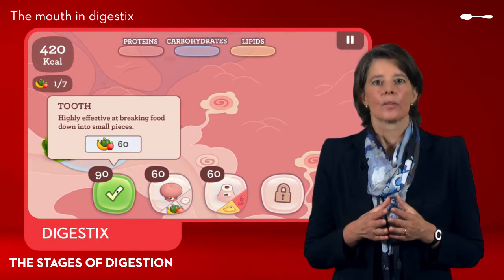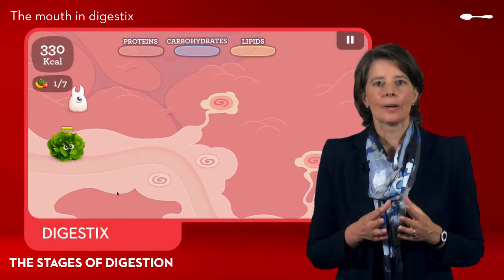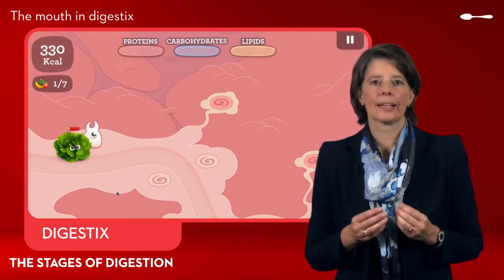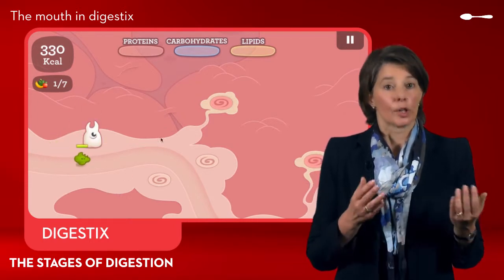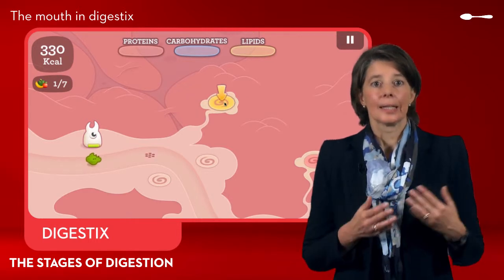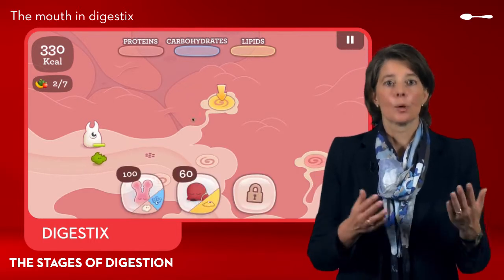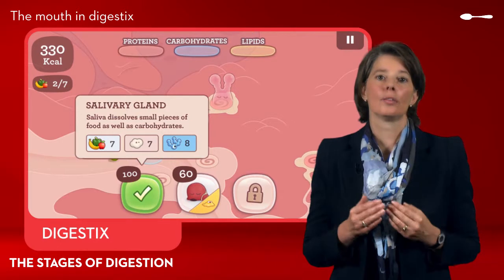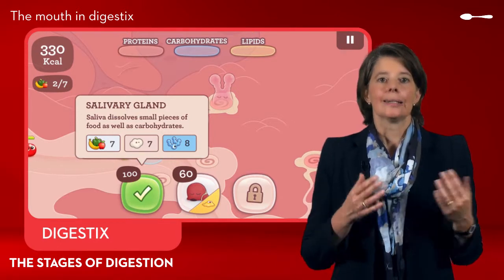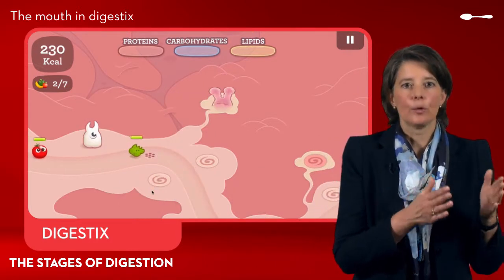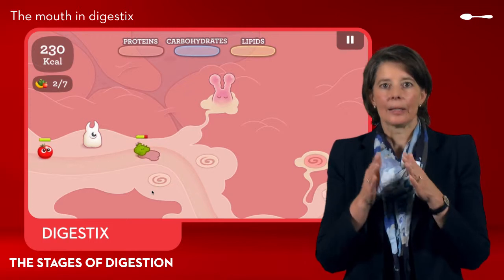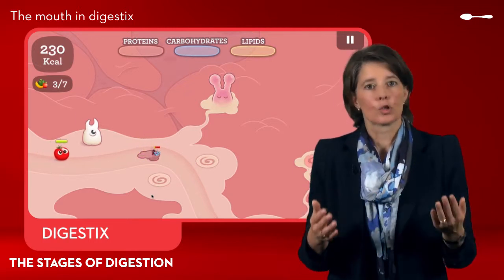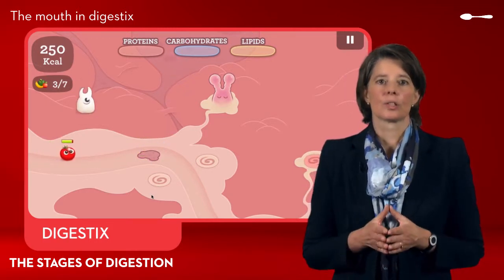In Digestics, the teeth and salivary glands are game pieces associated with the mouth. For digestion to be effective, these pieces must be placed at the upstream of the digestive tract. This allows the teeth to break food down into several fragments and saliva to start the chemical digestion process.